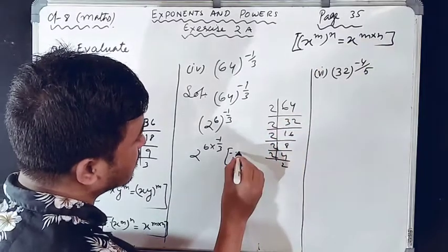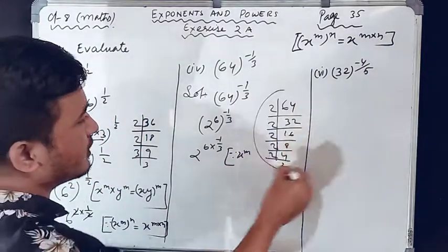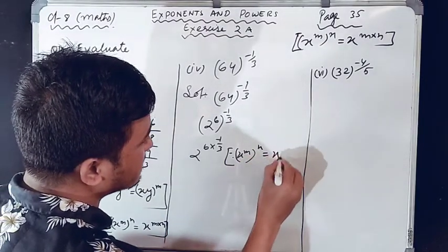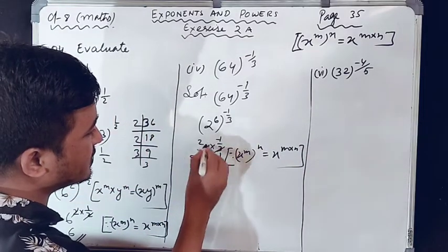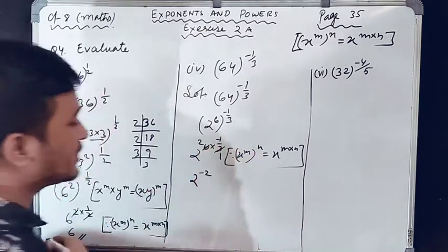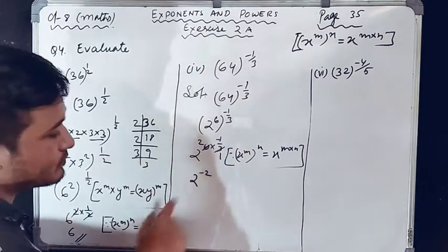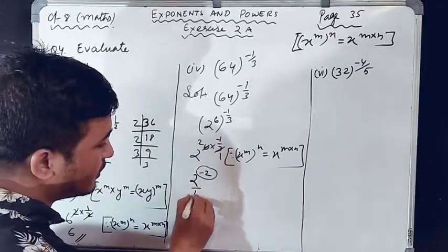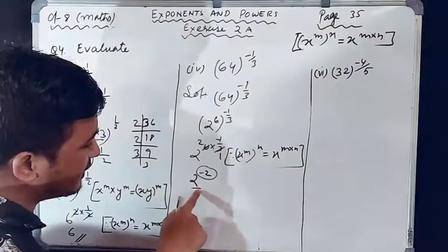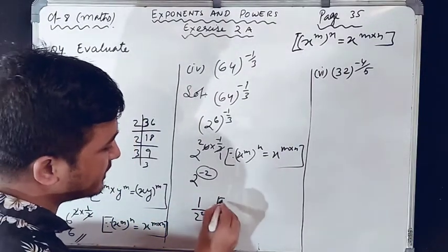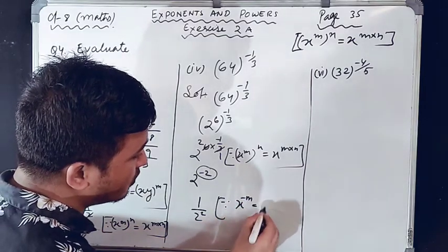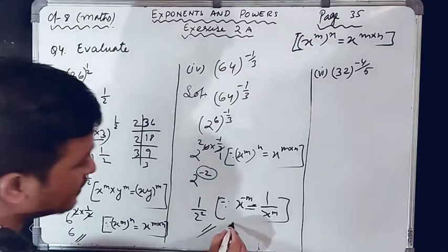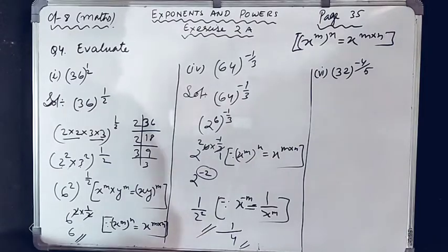Since the exponent is negative, apply the law x^(minus m) equals 1 by x^m, meaning the base becomes reciprocal and the exponent becomes positive. So 2 raised to the power minus 2 becomes 1 by 2 raised to the power 2. Write the law: x^(minus m) equals 1 by x^m. Since 2 squared is 4, you can write the answer as 1 by 2 squared or 1 by 4.